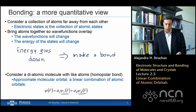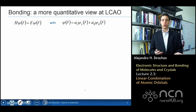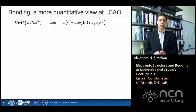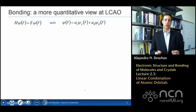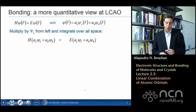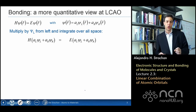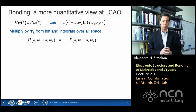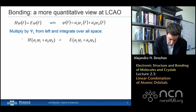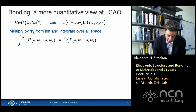In order to find the coefficients, I need to solve the Schrödinger equation with the approximation that the wave function can only be a linear combination of atomic orbitals. I'm going to start with the Schrödinger equation and multiply by the orbital on the atom on the left — multiplying both sides from the left with psi_left and integrating over all of space.